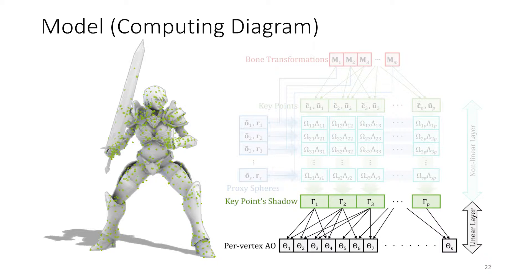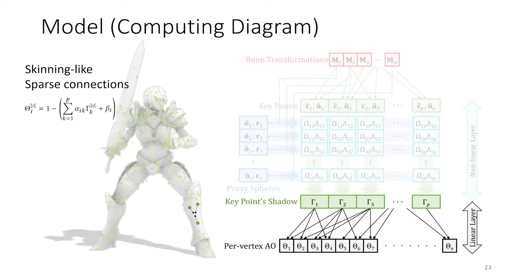Once we have the ambient occlusion calculated for each keypoint, in the linear layer we compute the final per-vertex AO as a linear combination of the shadow received by a number of keypoints. Each vertex only receives the contribution from a few local keypoints. This sparse linear connection helps reduce computational costs both during training and at runtime. We include both a weight alpha as well as a bias beta in order to encode local details at the vertex level. This approach is similar to skinning, so it can be effectively implemented on the GPU.